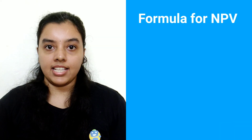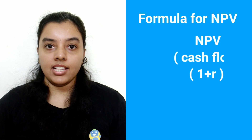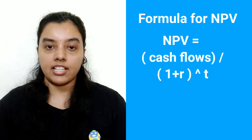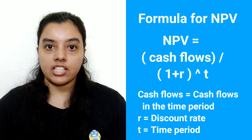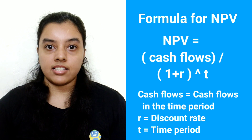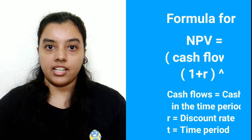The formula for NPV is: NPV equals cash flows divided by 1 plus R raised to the power of T, where cash flows is the cash flow in the time period, R is the discount rate, and T is the time period.